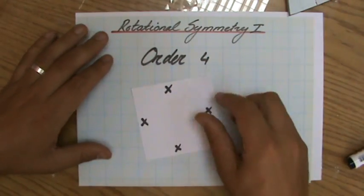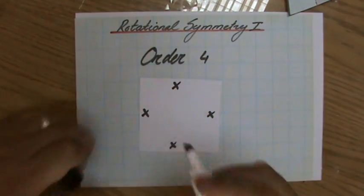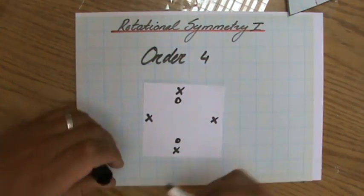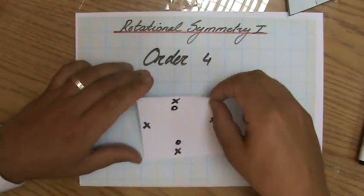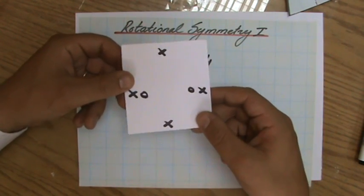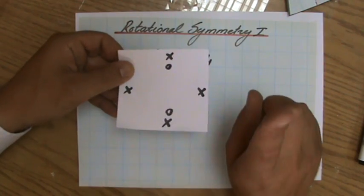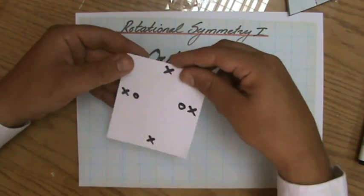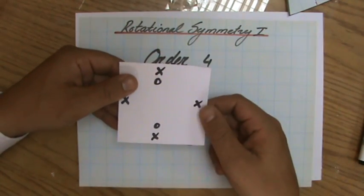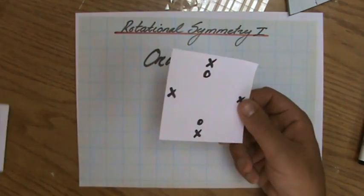Now, back to my square. This one has rotational symmetry of order four. Now, let's say I put a little circle there and a circle there, but not on the other sides. What is the order of rotational symmetry now? When does it look the same? No, it doesn't look the same. It doesn't look the same. Okay, now it looks the same. So one, and then back in its original position. So two. So now this square has rotational symmetry of order two. Fantastic.